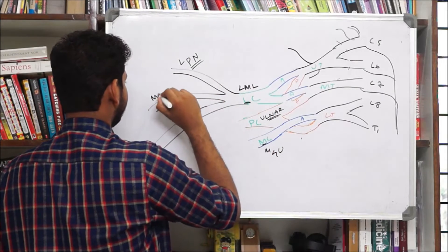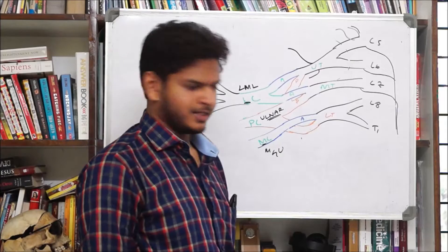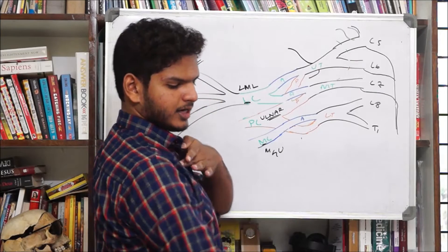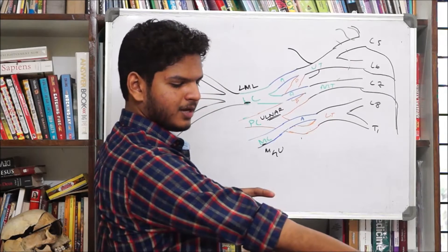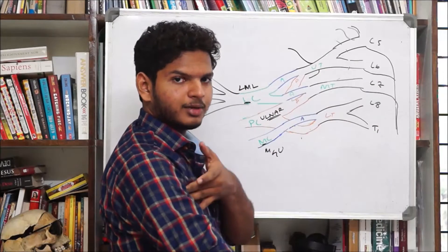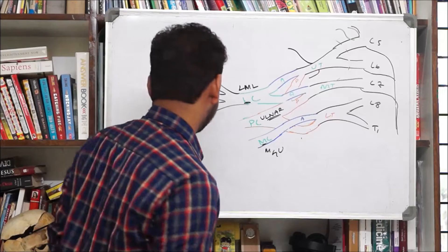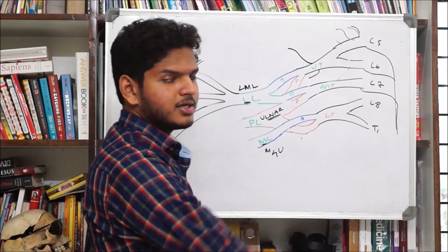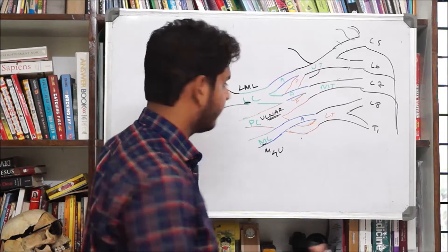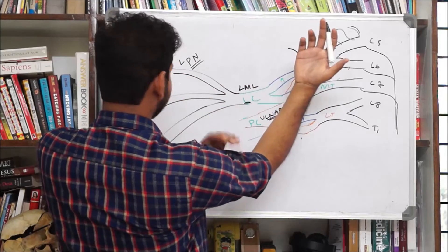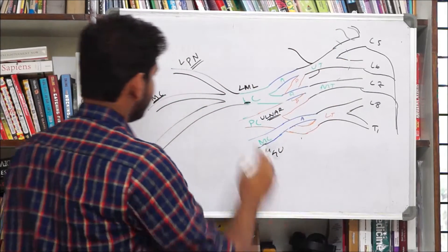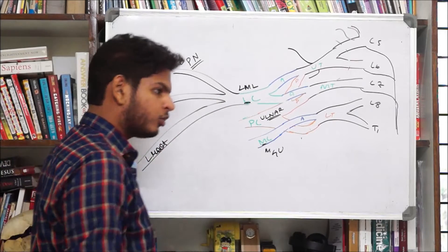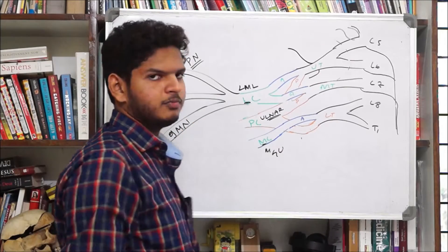The M here is the musculocutaneous nerve. The musculocutaneous, as the name suggests, it is muscular and cutaneous — the musculocutaneous nerve arises from here, goes over here, and it will supply the flexor group of the arm, that is the coracobrachialis, the biceps brachii, and the brachialis muscle. And it will supply the cutaneous part over the skin of the lateral side of the forearm. The last L is actually the lateral root of the median nerve — we will come to the median nerve later.